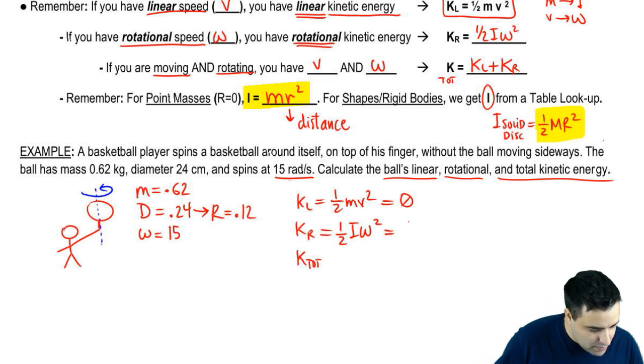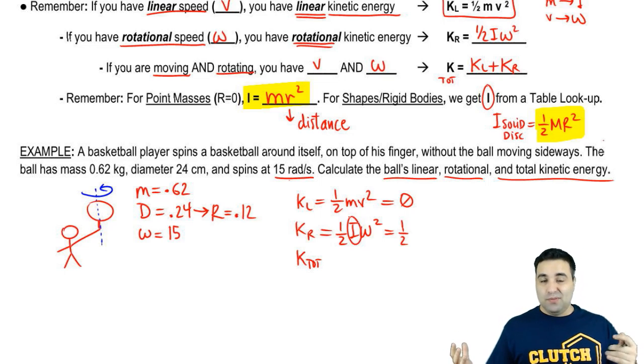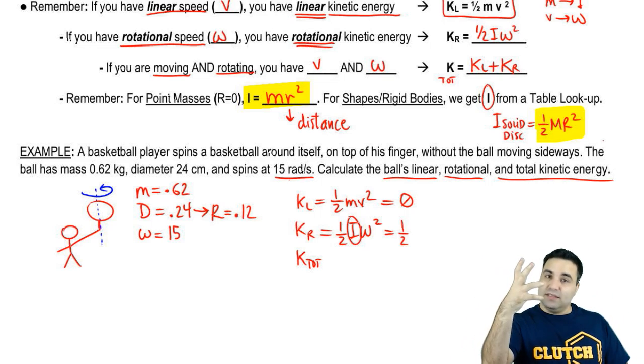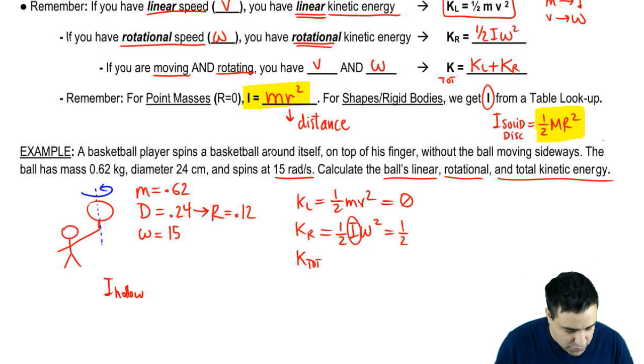Now, a basketball has the moment of inertia of a hollow sphere. I didn't give you the equation for that. I didn't explicitly say it was a hollow sphere, but you should know that a basketball is a shell and then there's air inside. So it is a hollow sphere. So I, for a hollow sphere, you would look it up or it would be given to you, is two thirds m r squared.